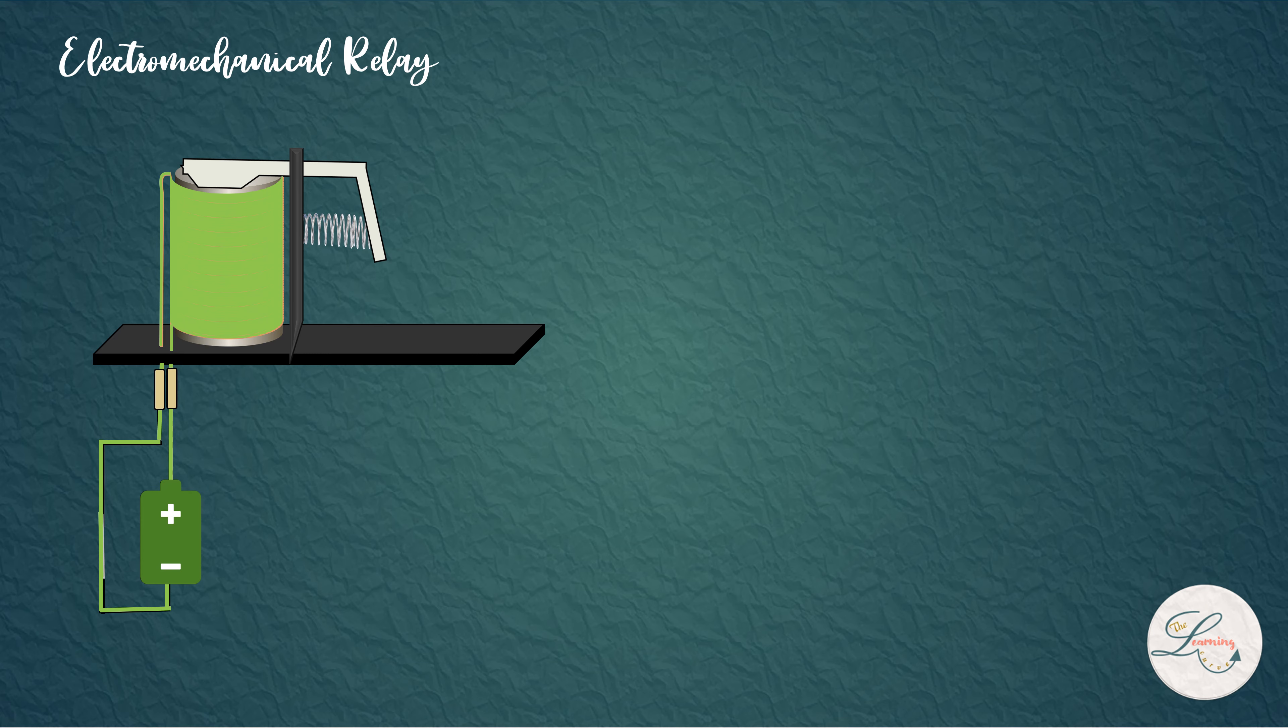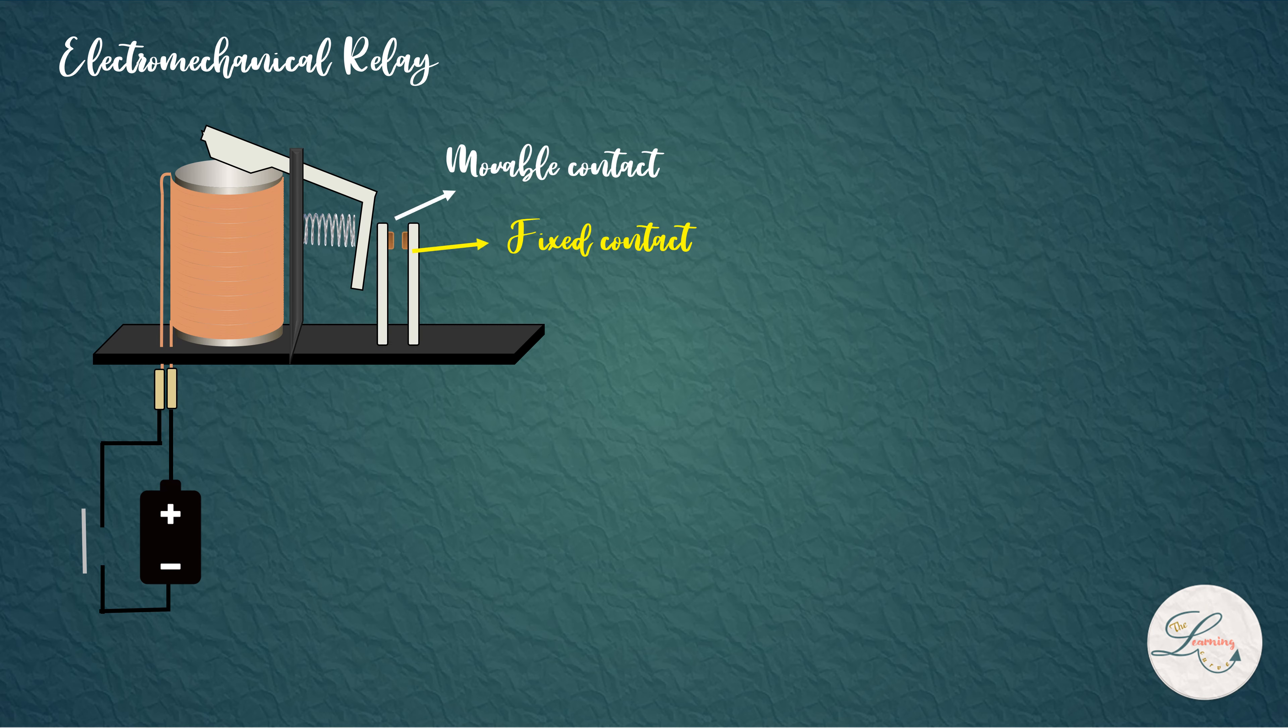And when the coil is de-energized, the armature returns back to its position. A movable contact is connected to the armature. When the armature is attracted towards the coil, this movable contact either closes or opens the circuit.